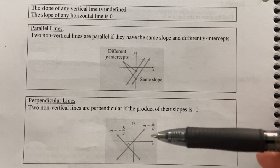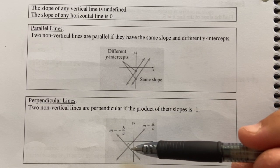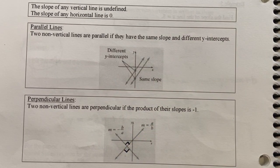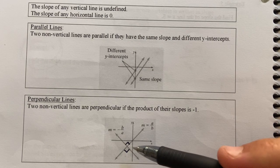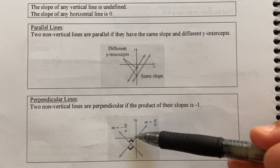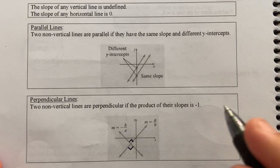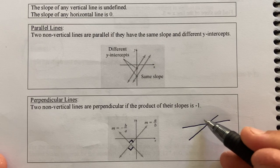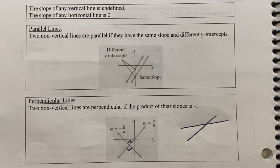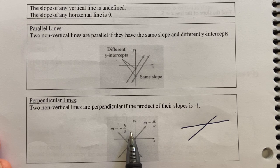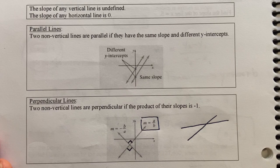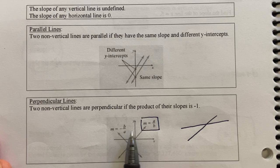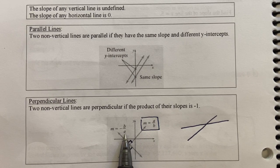Perpendicular lines intersect in a specific way where 90-degree angles are formed around the intersection. So perpendicular means the lines intersect and form a 90-degree angle between them. Two lines can intersect without being perpendicular — if none of the angles are 90 degrees, they are neither parallel nor perpendicular. For slopes: if one slope is a/b, the perpendicular slope is −b/a — you flip it and change the sign.